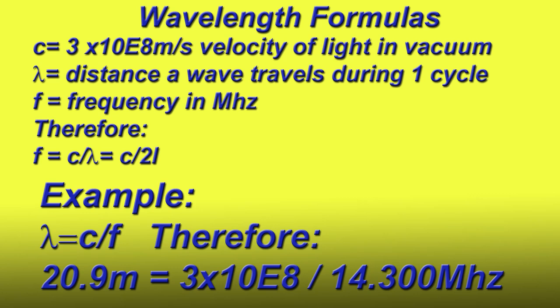So let's put that in an example. We take the speed of light, which is 3×10^8, over the frequency, in this case 14.300 megahertz, and we get an answer of 20.9 meters.